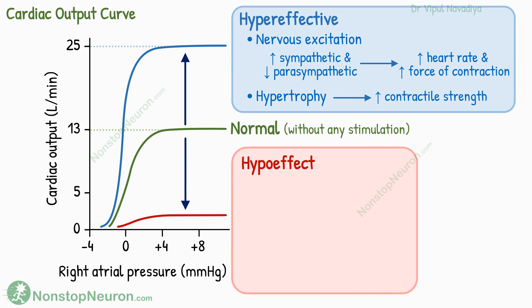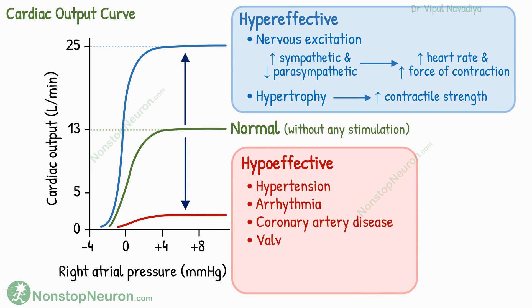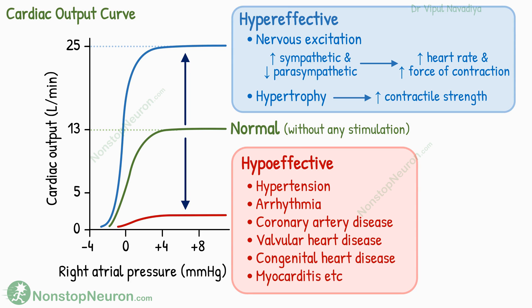Now let's see the factors that make the heart hypo-effective. It happens in pathological conditions like hypertension, in which the heart has to pump against higher arterial pressure, arrhythmia, coronary artery disease, valvular heart disease, congenital heart diseases, myocarditis, etc. They lower the cardiac output curve, so the maximum cardiac output cannot increase as much as it can under normal circumstances.